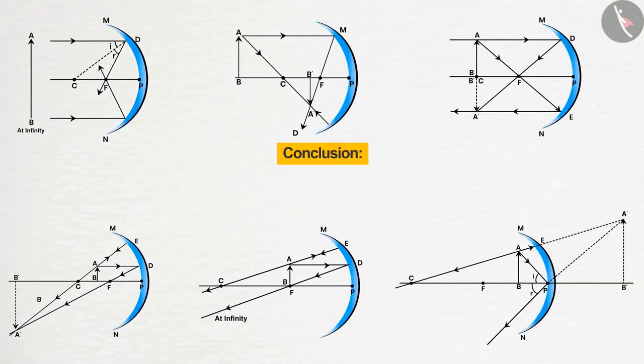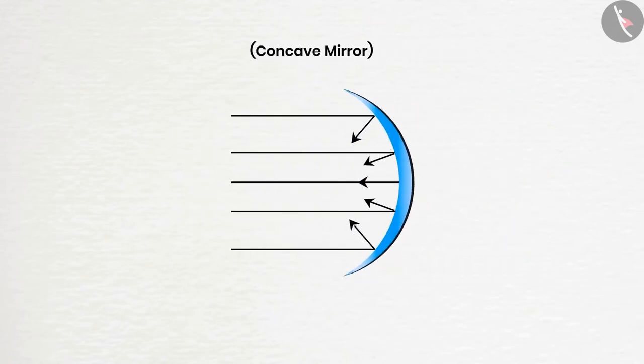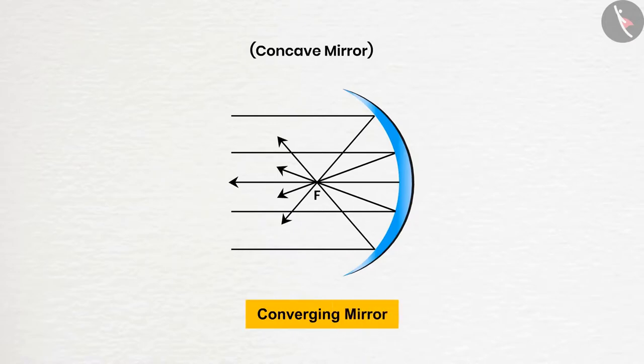So friends, by this activity, we can conclude that a concave mirror can form any kind of image—erect or inverted, real or virtual, large or diminished. In most cases, the concave mirrors converge the light at a point. Hence, they are also called converging mirrors.